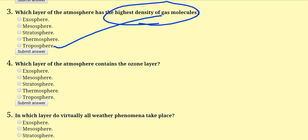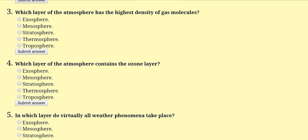Which layer of the atmosphere contains the ozone layer? The ozone layer is present at the level of the stratosphere, which absorbs ultraviolet radiation.